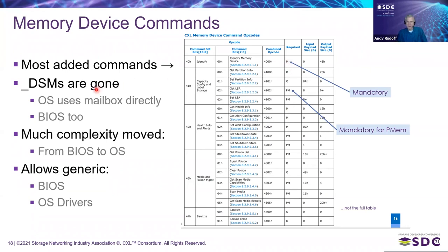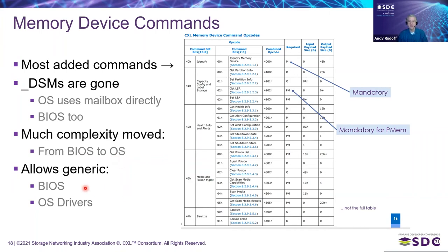DSMs are gone — we don't have all that complexity anymore. We ripped that code out of the BIOS. Once we move to CXL, the OSes can just use these mailbox commands directly, and the BIOS too, and they can have generic implementations of their CXL support. Another way to look at it is that we've removed complexity from the BIOS but moved it to the OS — and that does allow us to manage it better and allows these implementations to be generic.